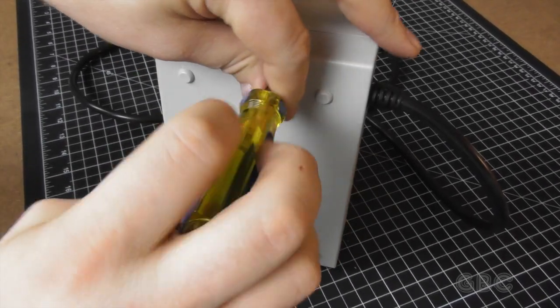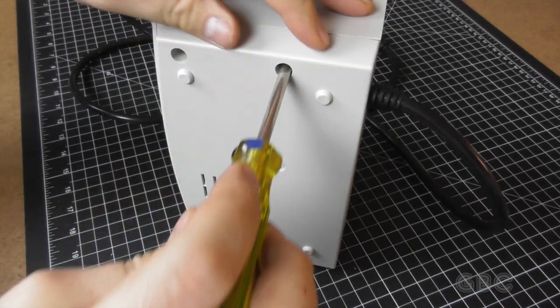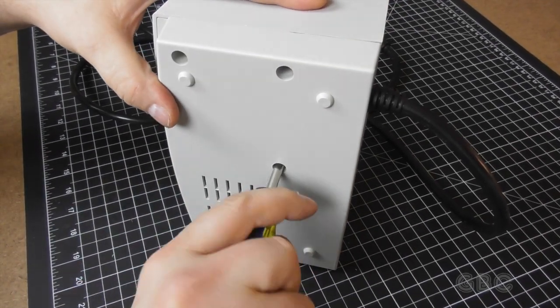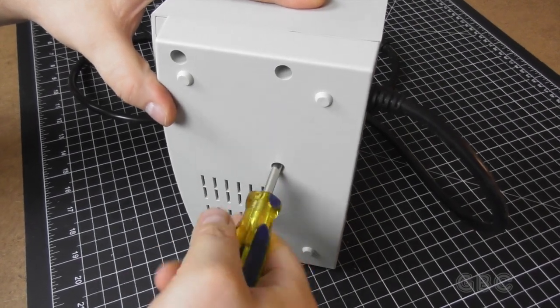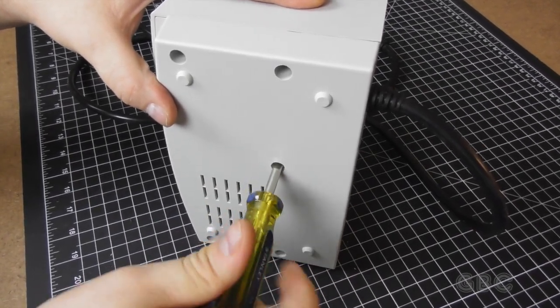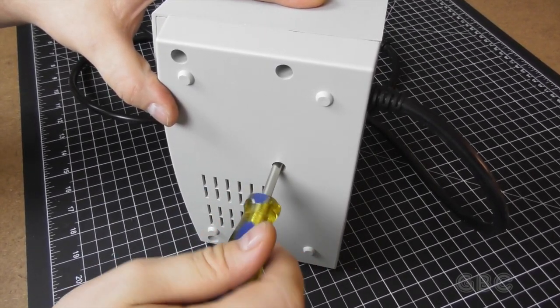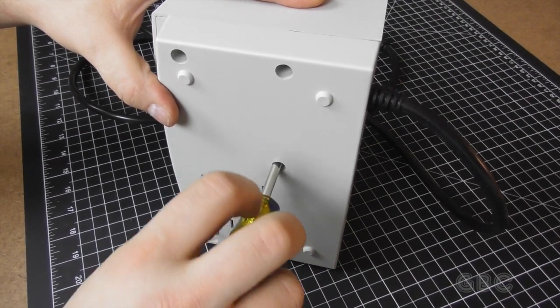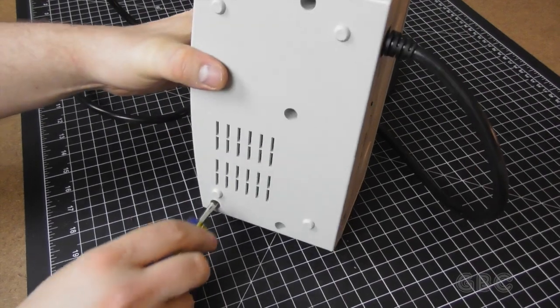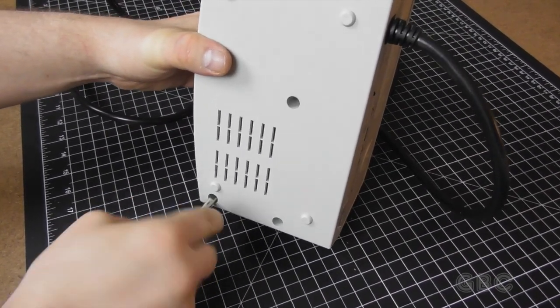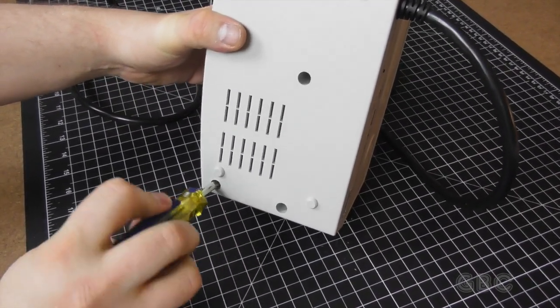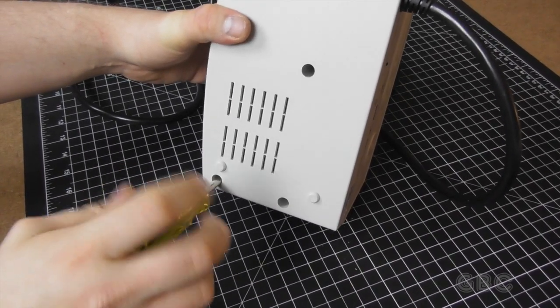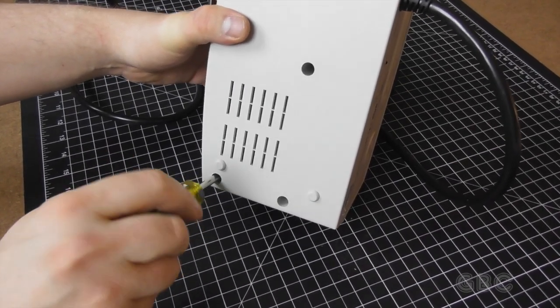Now before I get it totally apart, I'm going to kind of guess what's going on in here. I know there's definitely a transformer in here because of the weight of the thing. There's relays in here because you can hear it clicking as the voltage goes up and down or whatever as it gives the correct line output. And then there's going to also be a control circuit that's going to sense the voltage and control the relays.